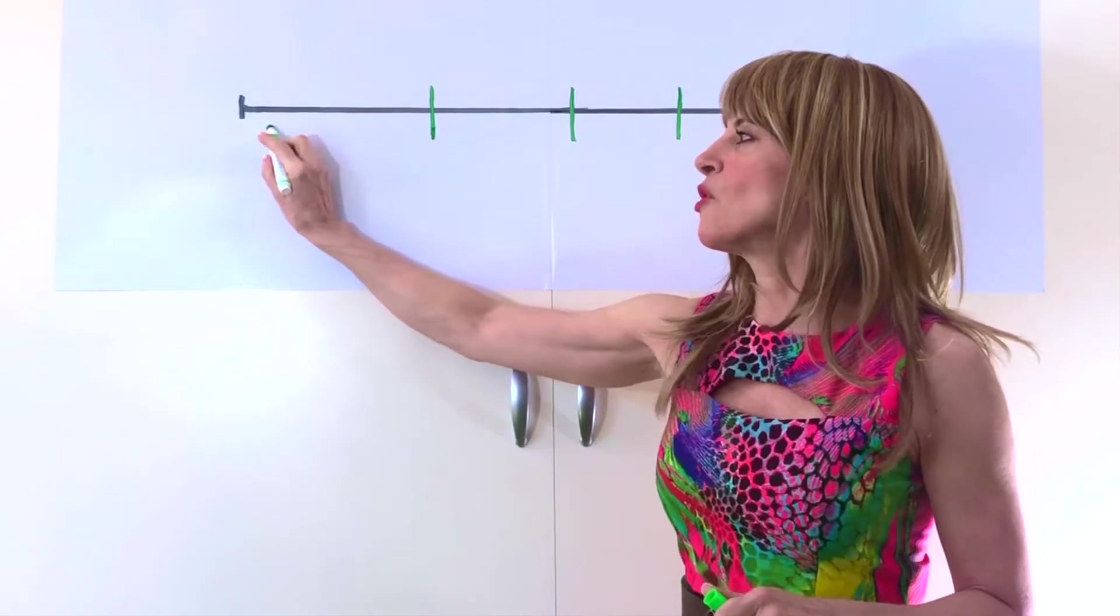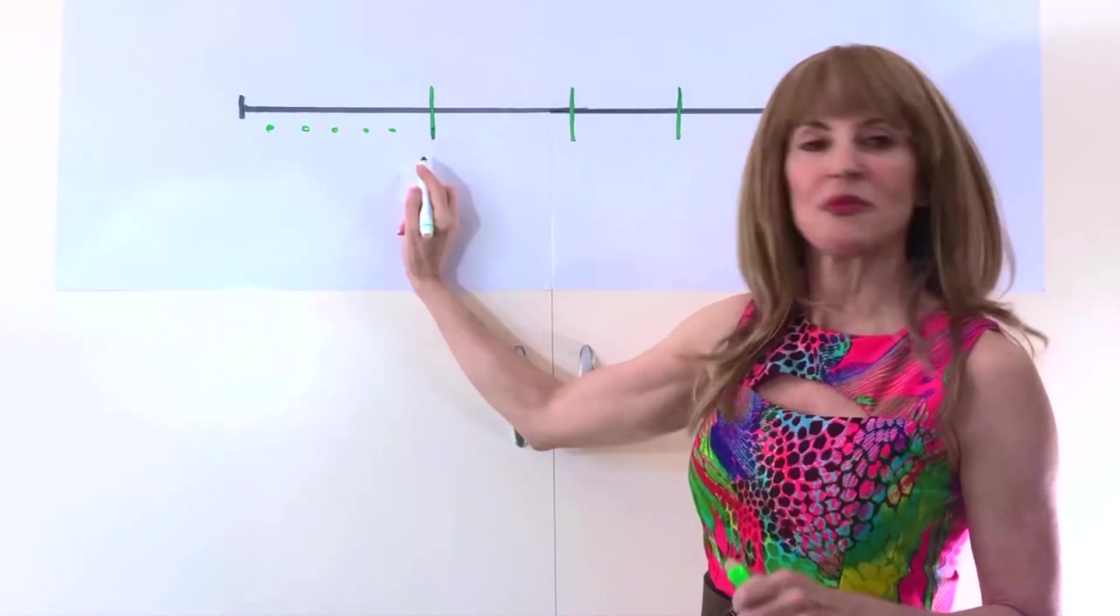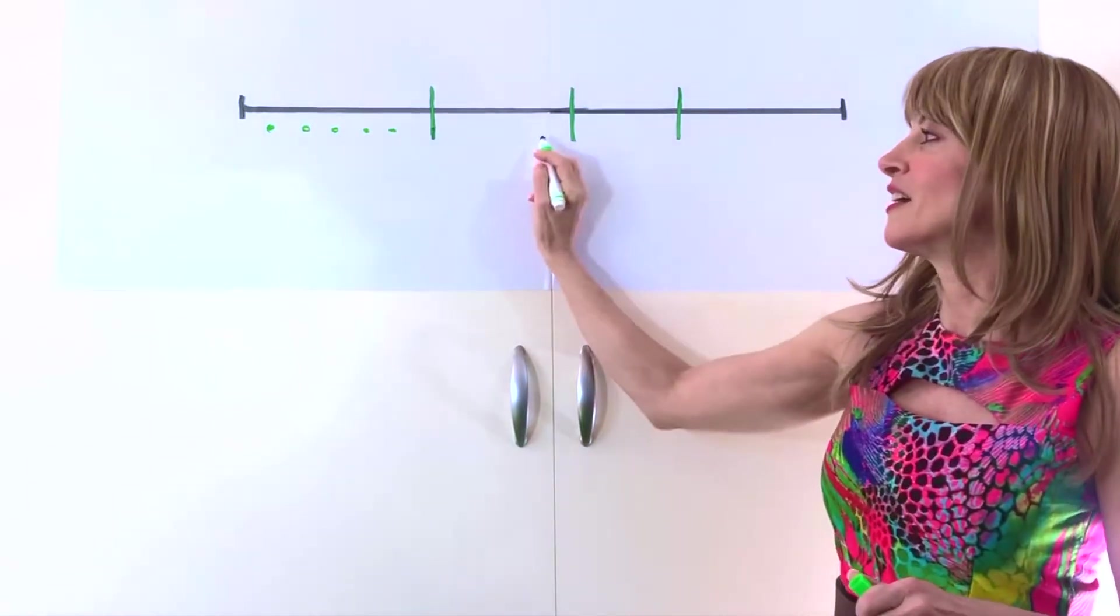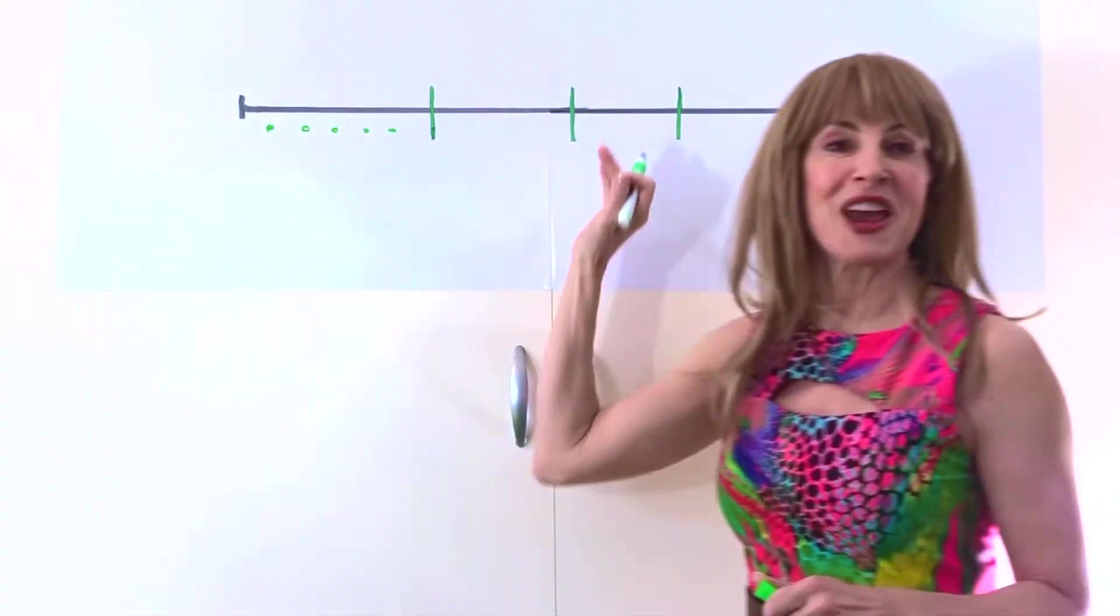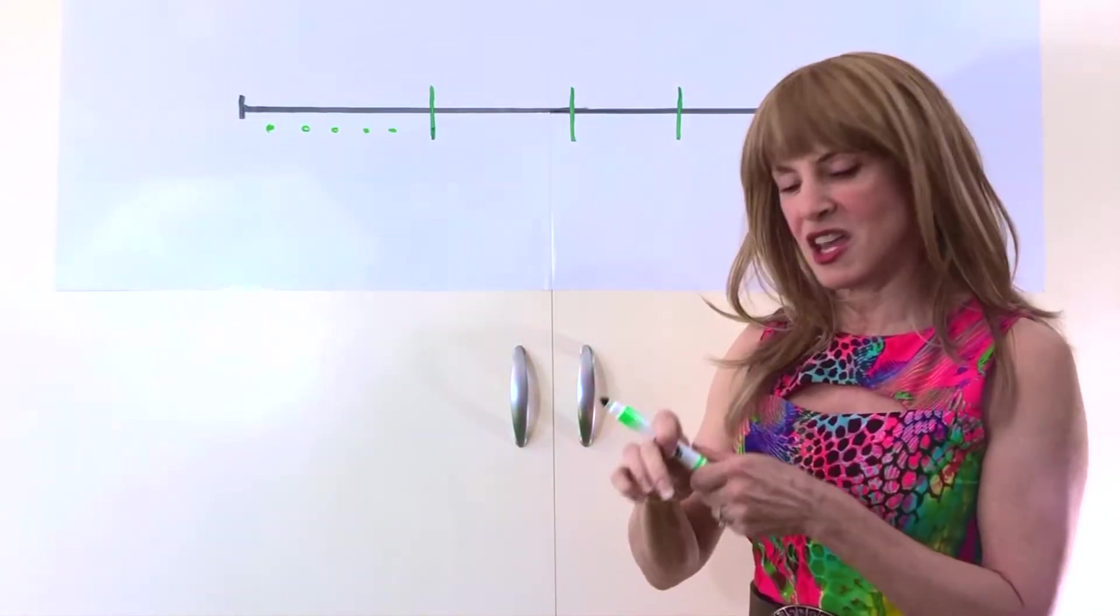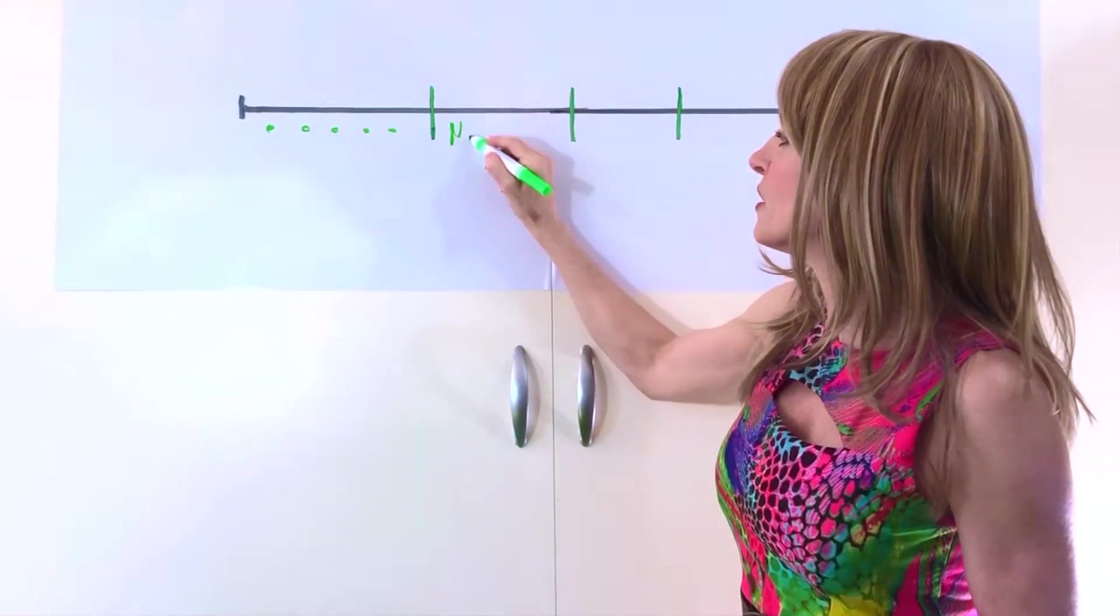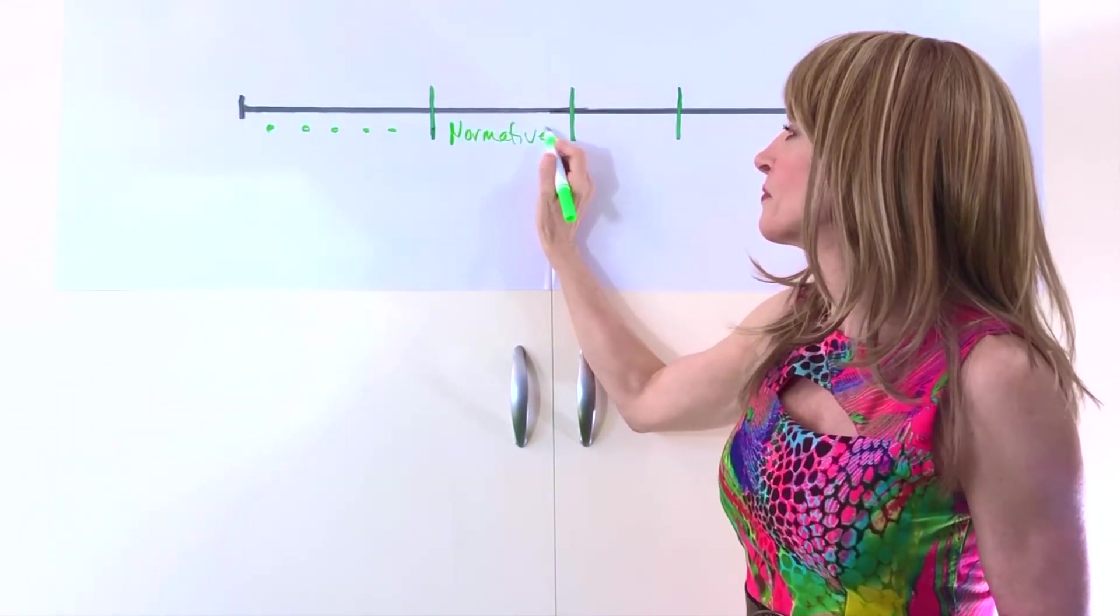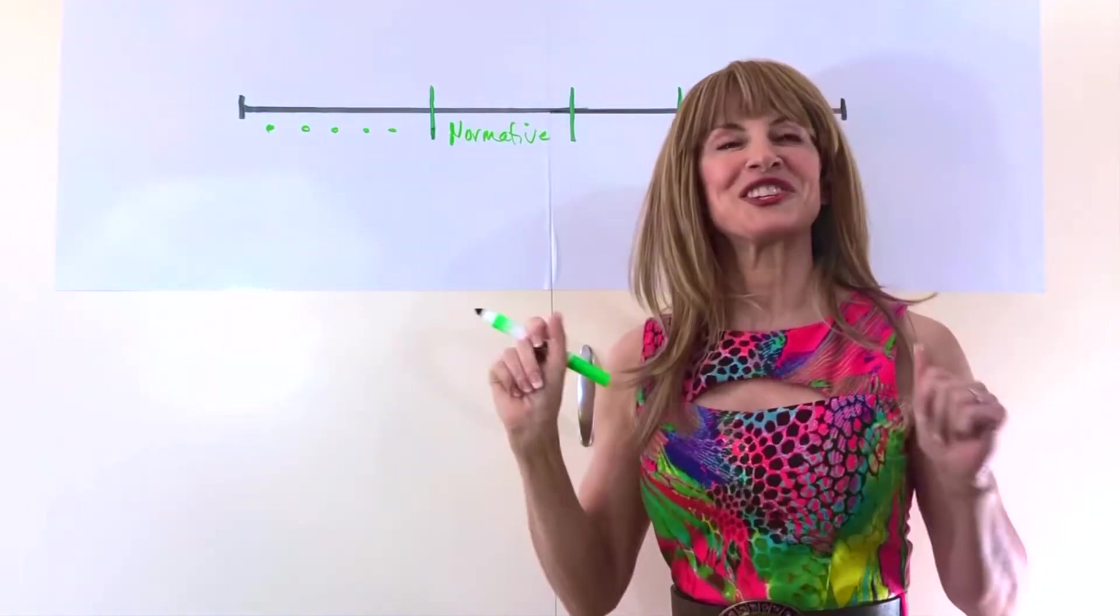So if we keep going up the scale we hit here. This is the middle range and what we would say is a normative level of narcissism.